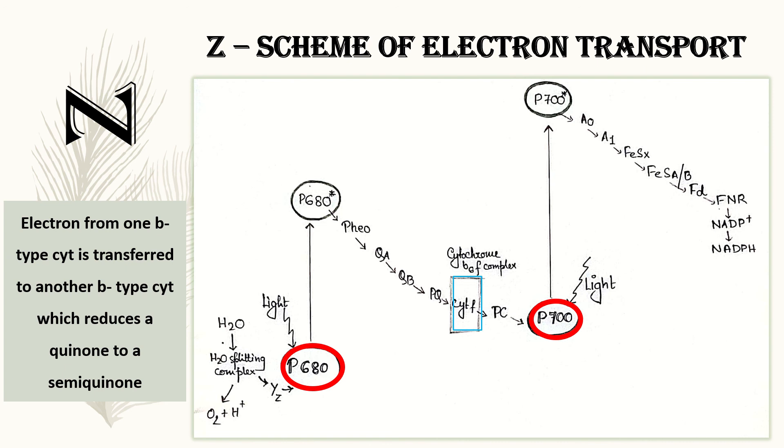One is transferred to one of the two B-type ones and the other to that FESR. From where it travels to cytochrome F, plastocyanin and finally reduces P700 of PS1. This was your linear electron flow.